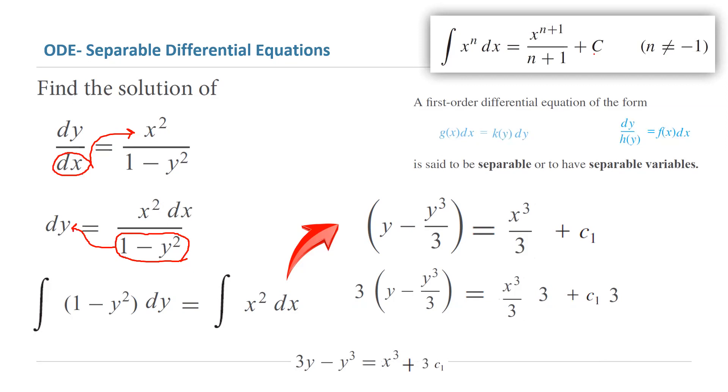You can bring everything to one side and write the equation in implicit form. If you do that, you get negative x cubed plus 3y minus y cubed equals to c. Well, what happened to 3c sub 1? I just rename it to a new constant, c.